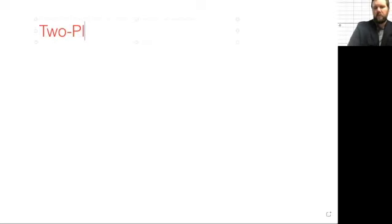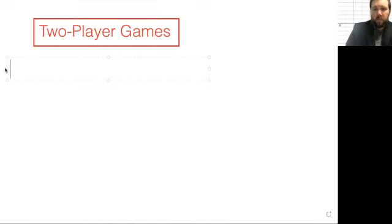So last time we talked about two-player games, and basically there's a particular type of two-player game called a combinatorial game, and it has these properties.